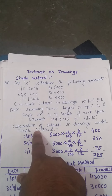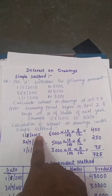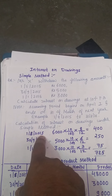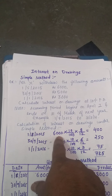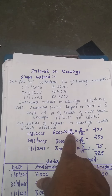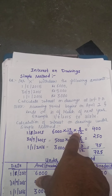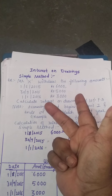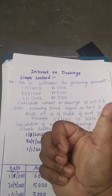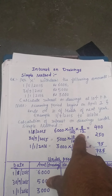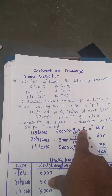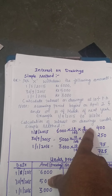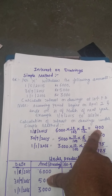Now let us see the calculation under the simple method. For the withdrawal on 1/8/2015, the amount is Rs. 6000 and the rate of interest is 10%. Counting the months from August to March: August, September, October, November, December, January, February, March — that is 8 months. So the amount was used for 8 months out of 12. Interest = 6000 × 10% × 8/12 = Rs. 400.